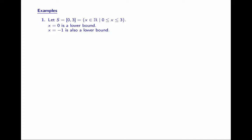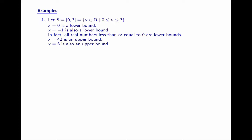In fact, it's strictly less than all elements in my set. All real numbers less than or equal to 0 are lower bounds. Of all lower bounds, 0 is the greatest one. 42 is an upper bound — 42 is strictly larger than every element in S, which means it is greater than or equal to every element in my set. 3 is also an upper bound. Of all the upper bounds — and there are infinitely many upper bounds — 3 is the least one.